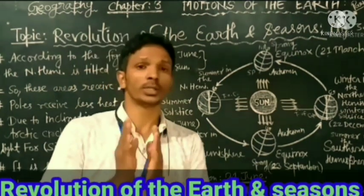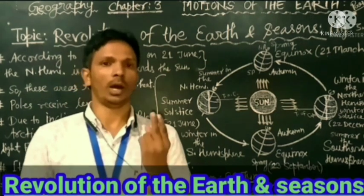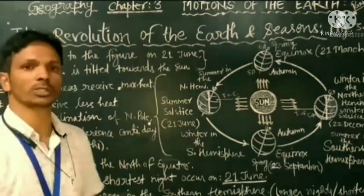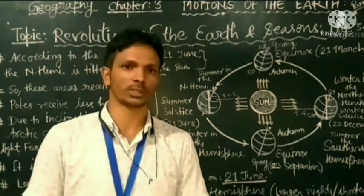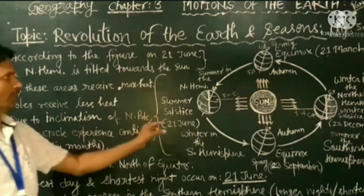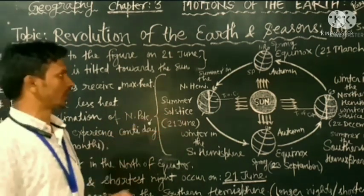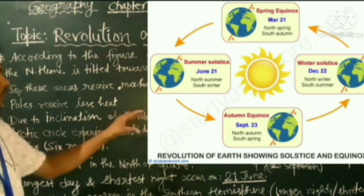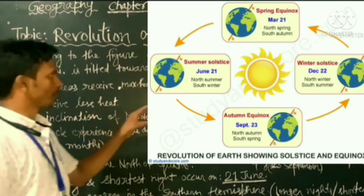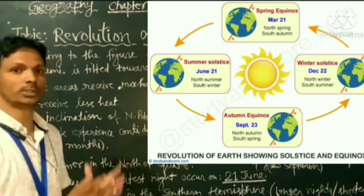Students, in this video we shall cover two phenomena of the revolution of the earth, that is the summer solstice and the winter solstice. You will see the image — it is also given in the book as figure 3.3, in which the whole structure is given, showing how the earth revolves around the sun and how the seasons change.